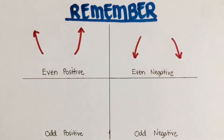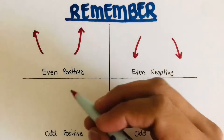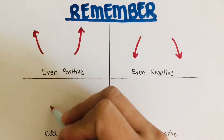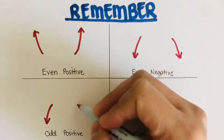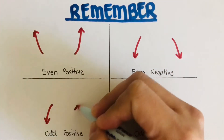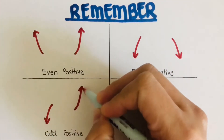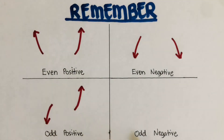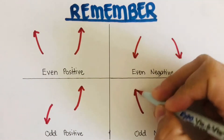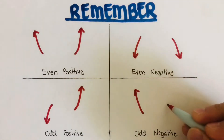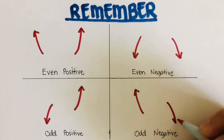A graph of a polynomial function is odd positive if the left end is directed downward and the right end is directed upward. And it's called odd negative if the left end is directed upward and the right end is directed downward.